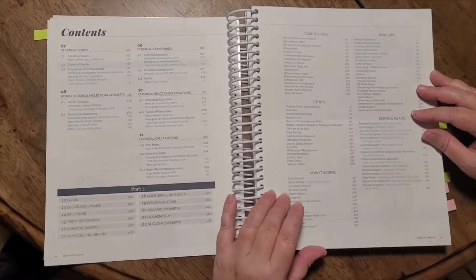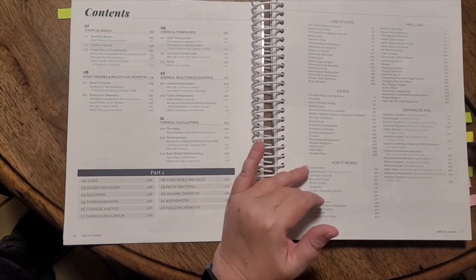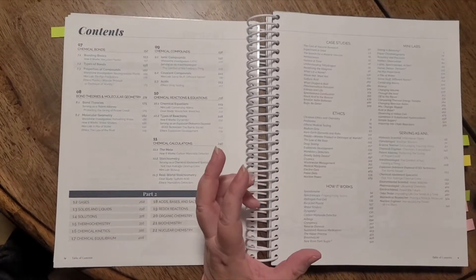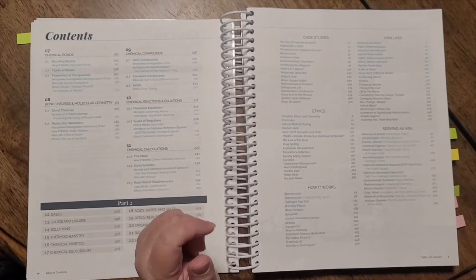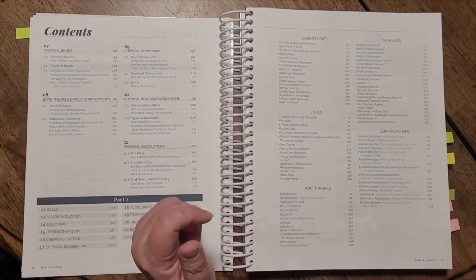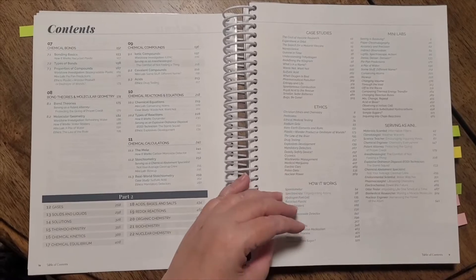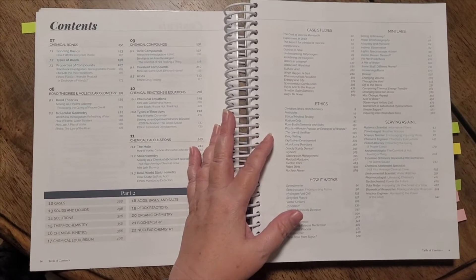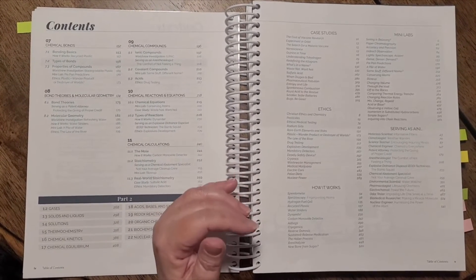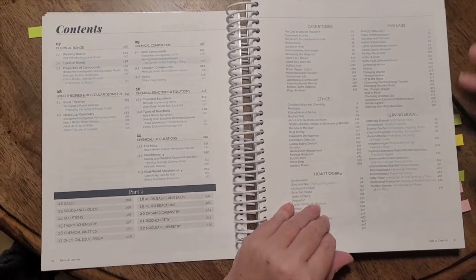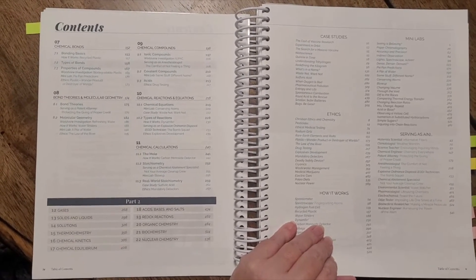On this page you'll notice that there are things called case studies, mini labs, ethics, serving as, and how it works. These are different things related to chemistry. The case studies talk about different areas in which chemistry is used. Ethics talks about ethics and science from a biblical worldview. Mini labs are short labs to reinforce a skill that is being taught. And then you have serving as, these are different types of jobs that you could find as a chemist.